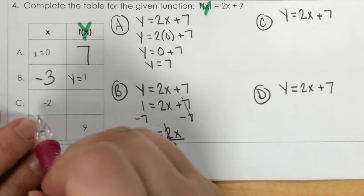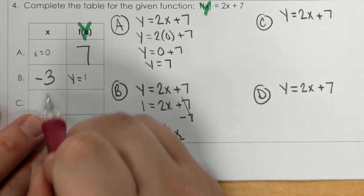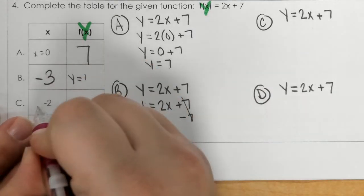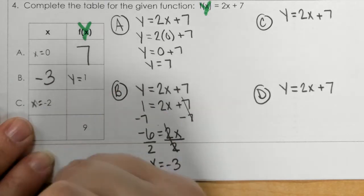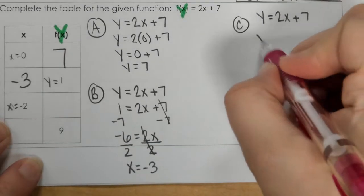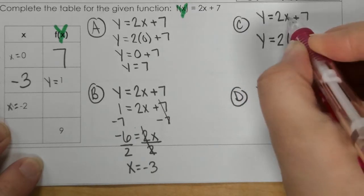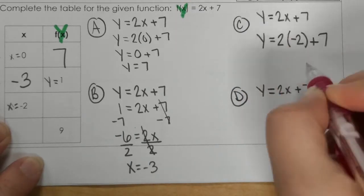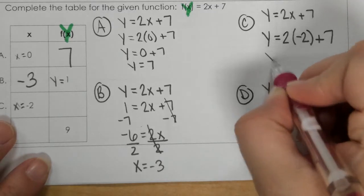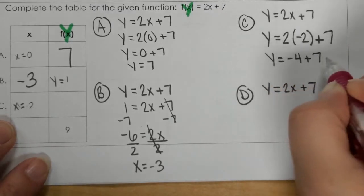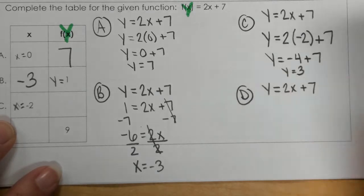And then, for C, we have negative 2. That's under the x. So, this is going to be your x value, x is negative 2. So, I plug the negative 2 in for that x right there. Plus 7. So now, I multiply. If I add 7, this gives me 3.